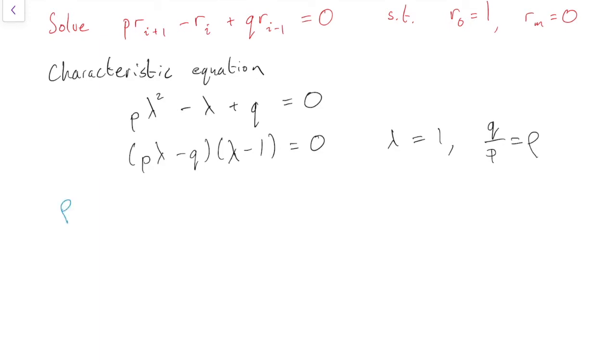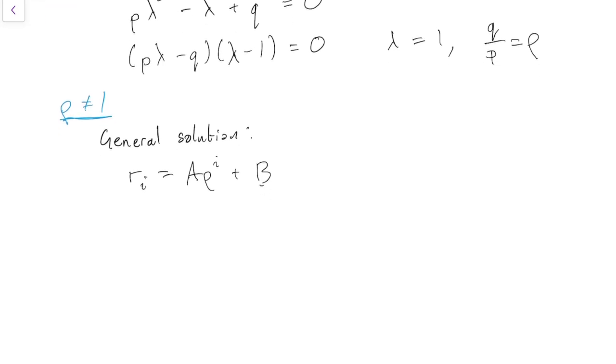So let's do the case rho not equal to 1 first. So that's the case where we have distinct roots. So when we have distinct roots, we know that the general solution is ri equals a lots of rho to the i plus b lots of 1 to the i. And 1 to the i is just 1, isn't it? So we can write that as b. That's our general solution, a rho to the i plus b.